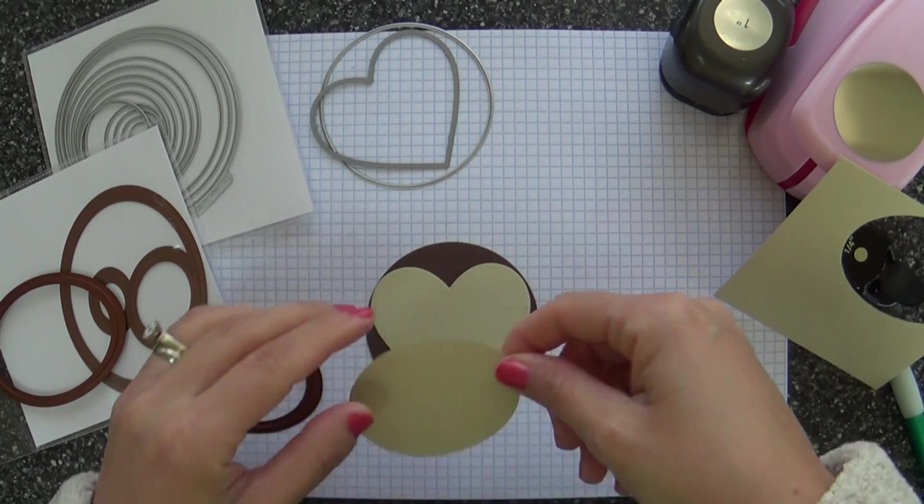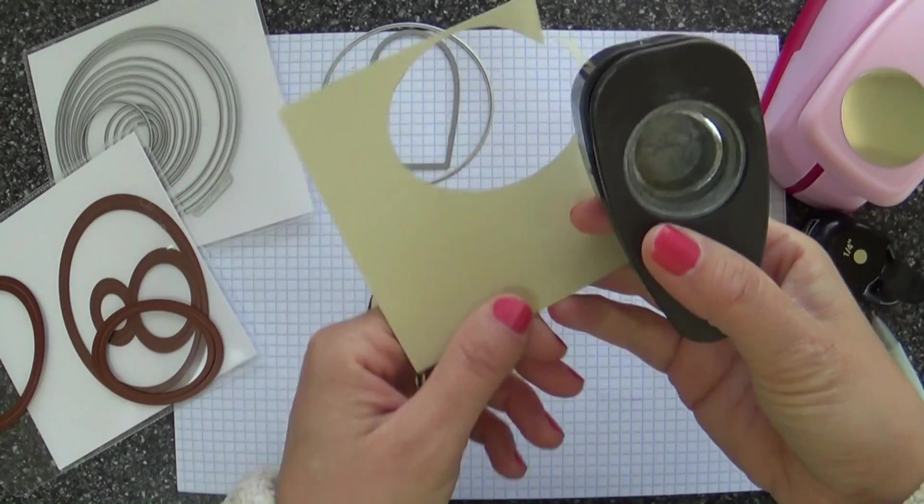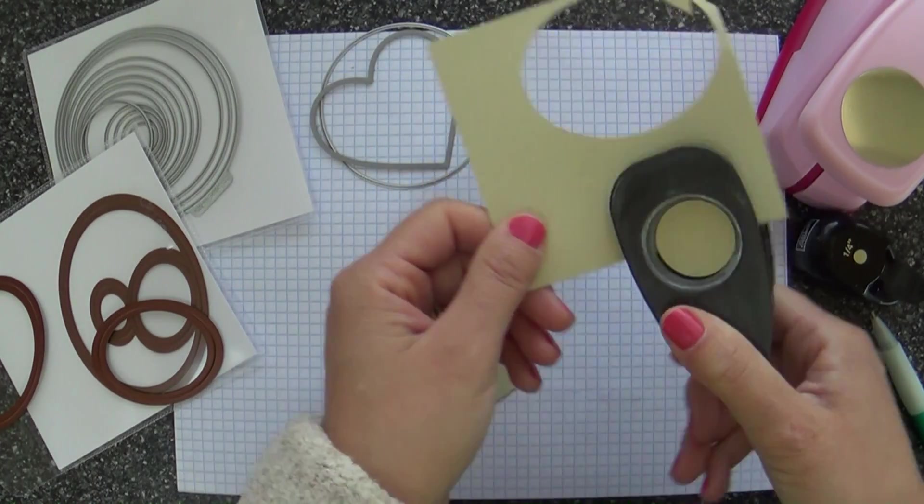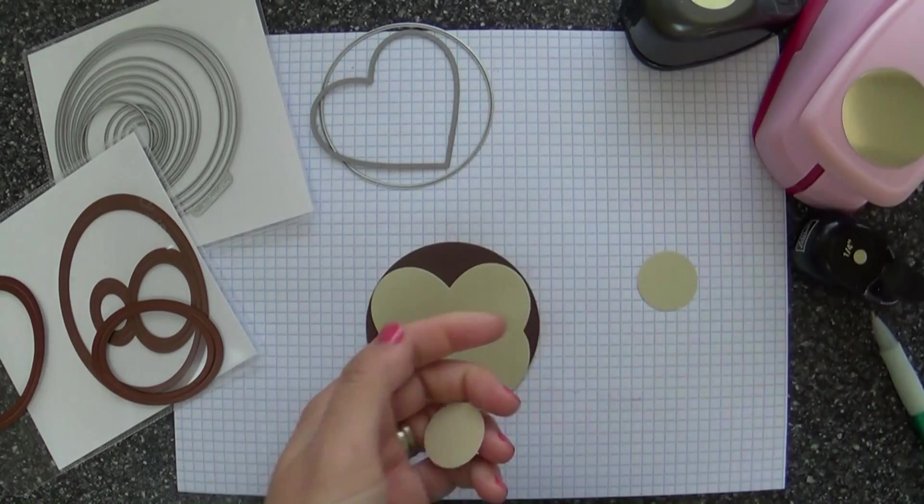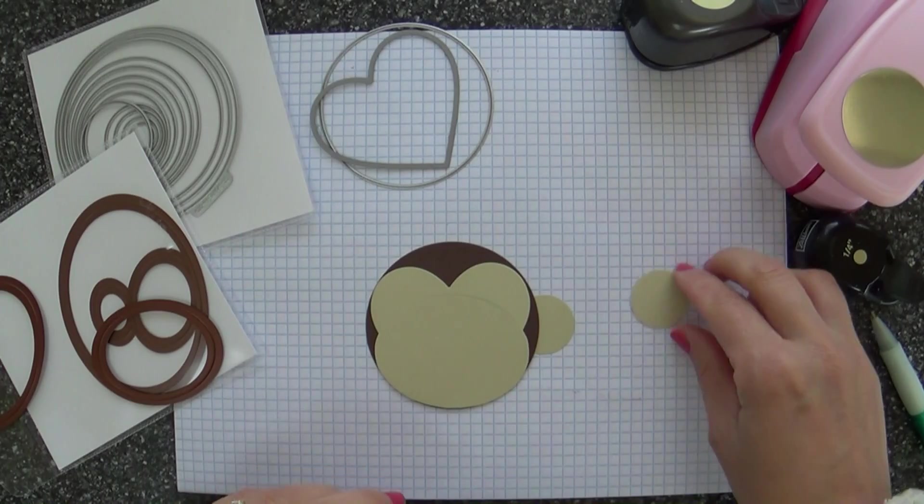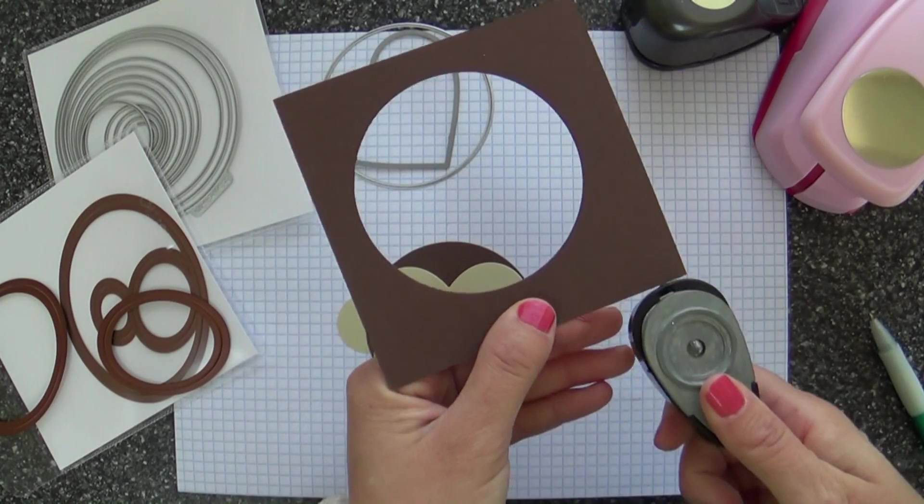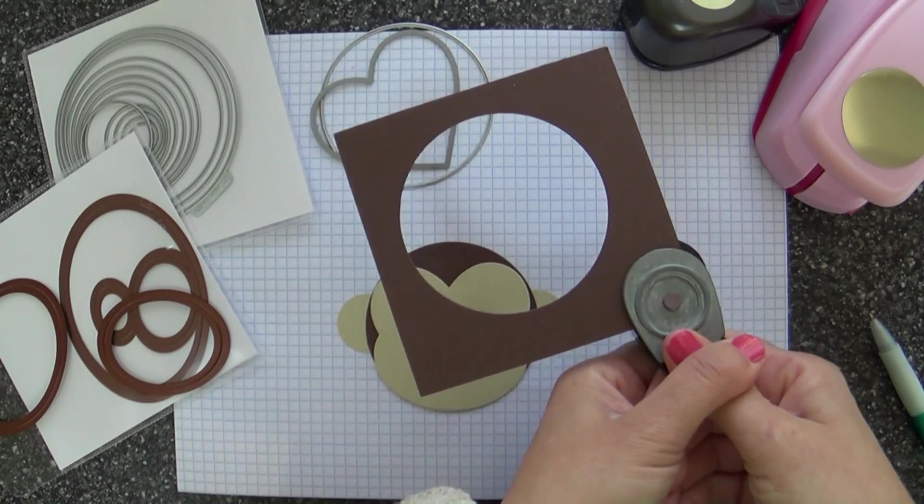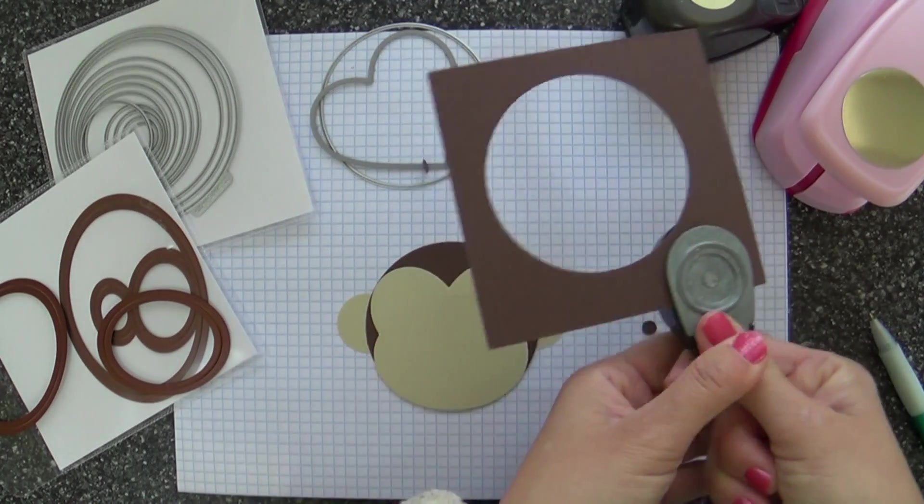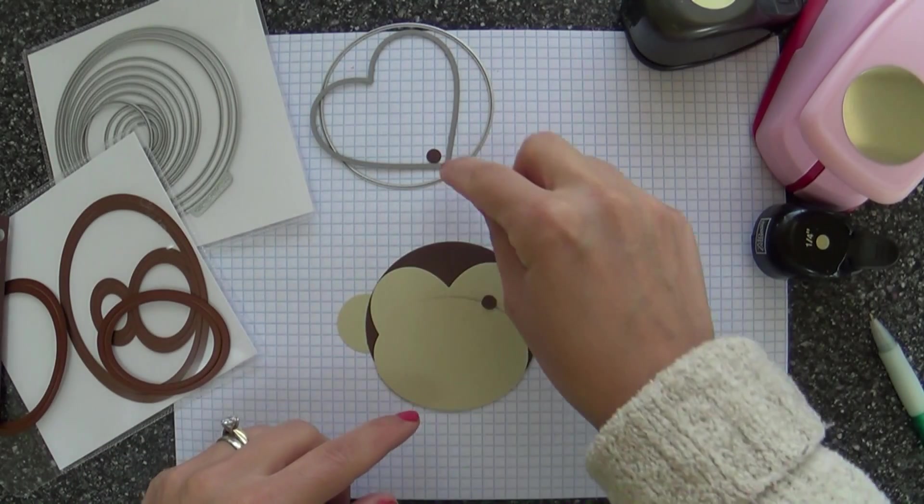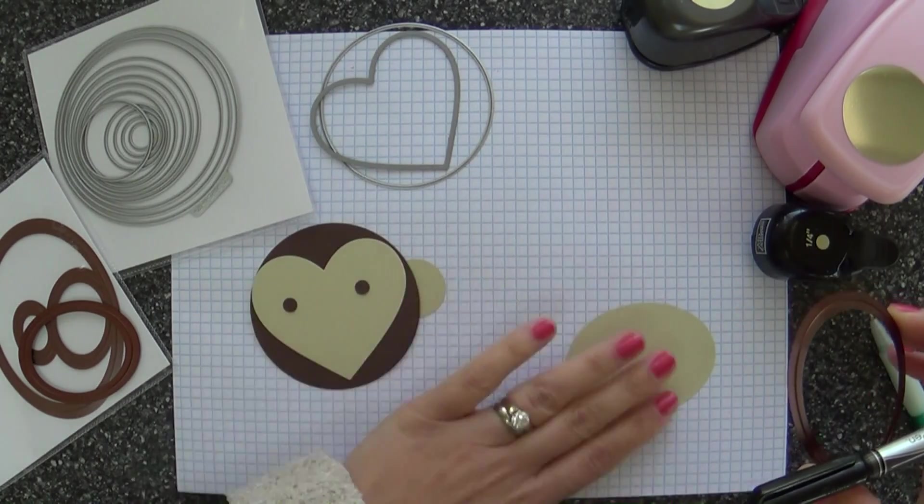The heart is from a Simon Says Stamp die set called Hearts and Spoons. And now I'm using an inch paper punch for the monkey's ears. And it's fun how you can just use all these random dies and punches and put them together. I think it's fascinating. If you ever go on Pinterest, look up like punch people or punch animals or paper punch animals. And you would not believe the things that people can create with shapes cut from punches and dies and things. I'm kind of weird, but I think it's really fun.